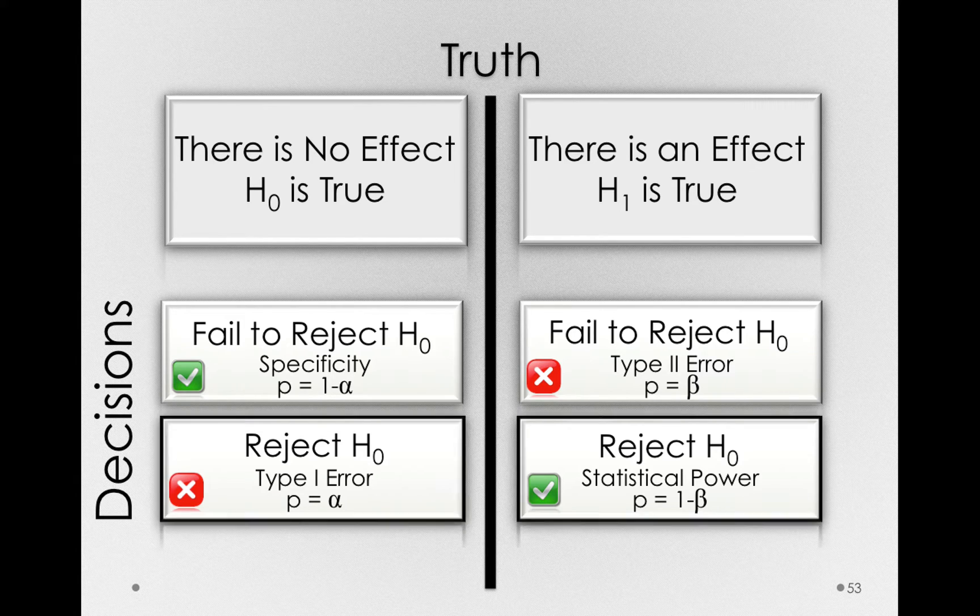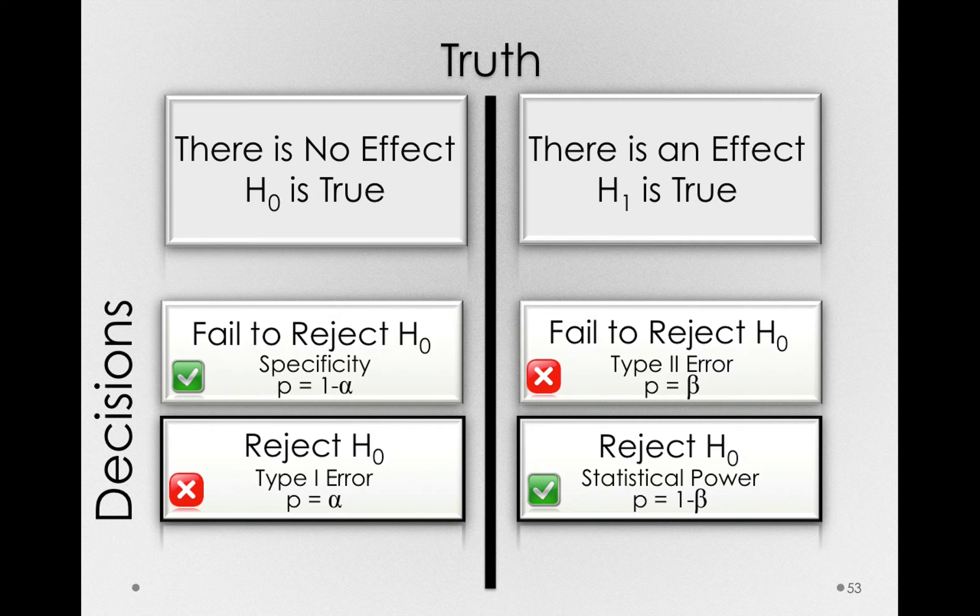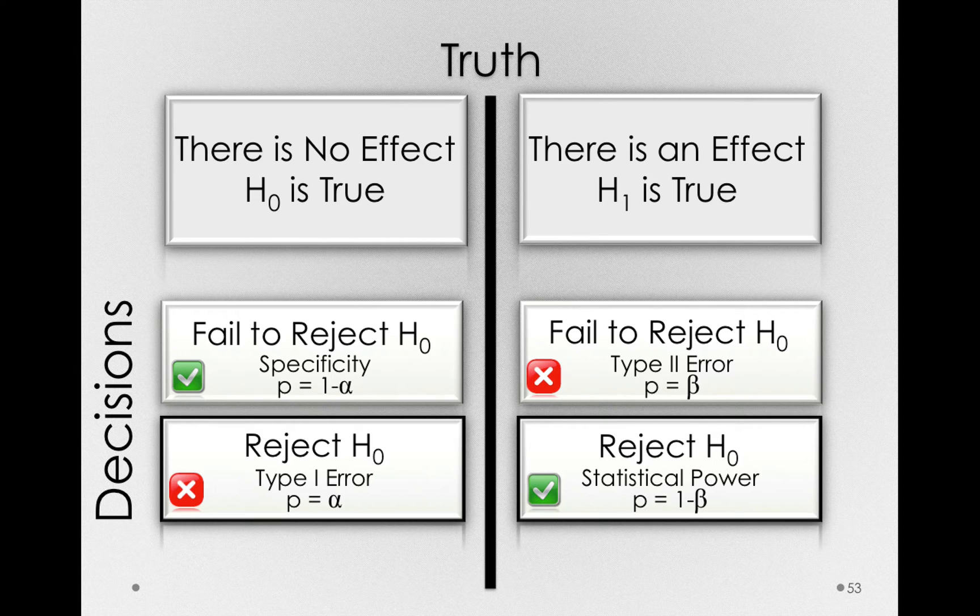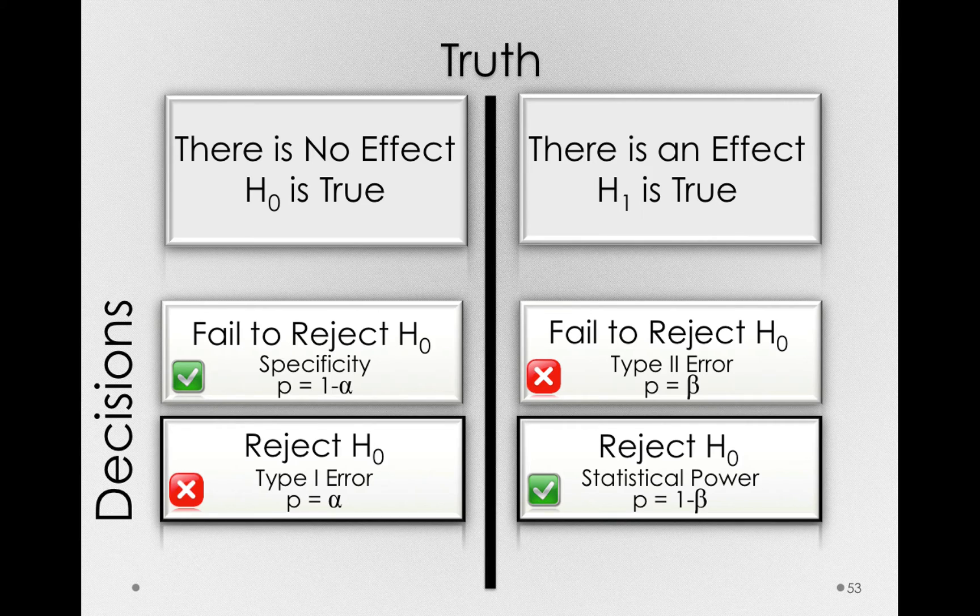So starting with our reject decisions, if H0 is true, we know the probability we would make this error, and we actually are under complete control of this error rate. That is, we set our alpha level. If it's really of concern to us, if we're in a situation where it's really problematic to false alarm, we can set alpha to be very, very low. There are some hypothesis tests that people run with alphas of 0.001.